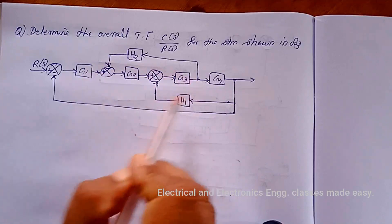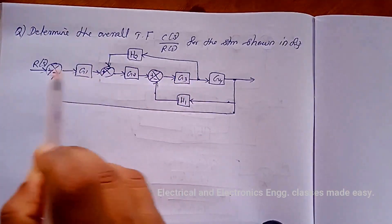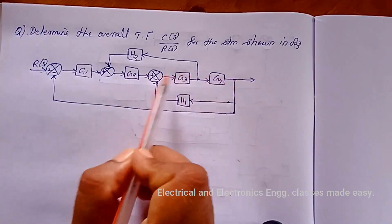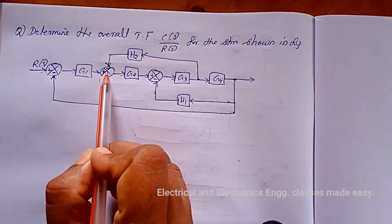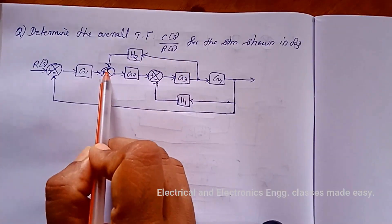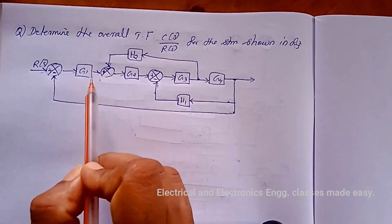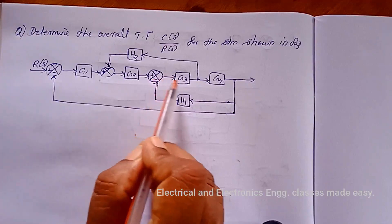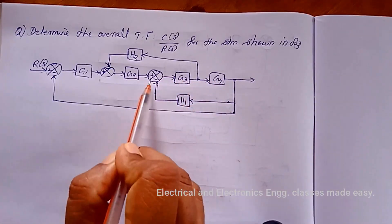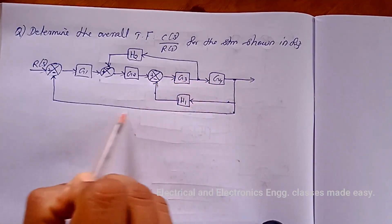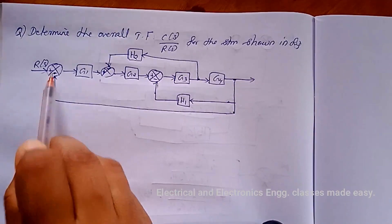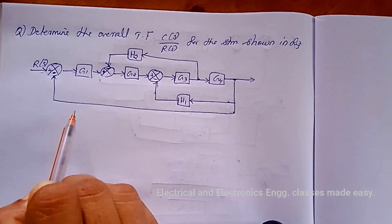This is the given figure and the given path. Here there is a feedback — this is a negative feedback. Here also there is another negative feedback, and here also another negative feedback.